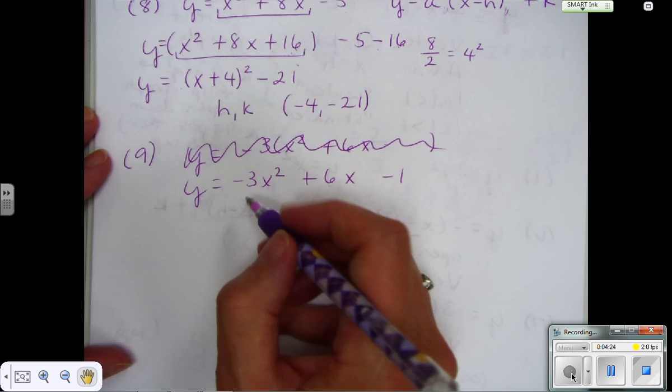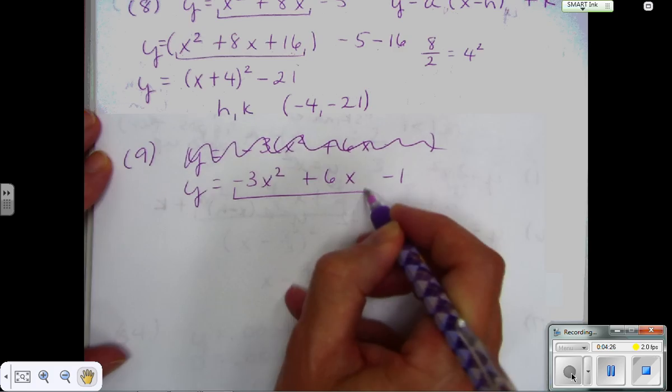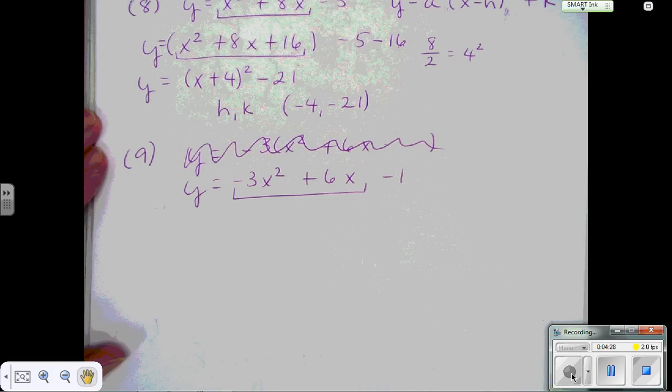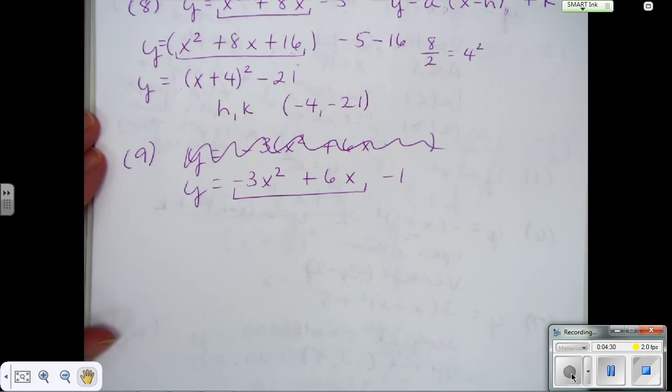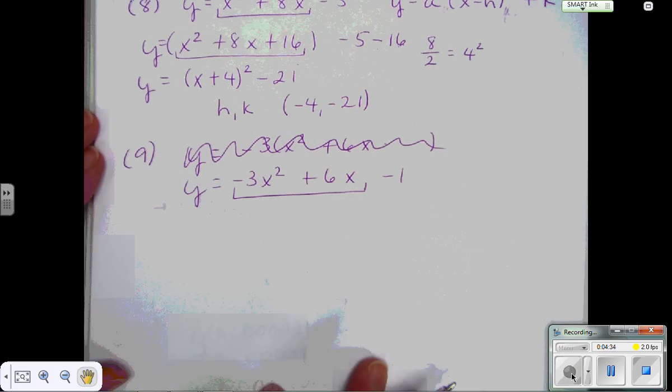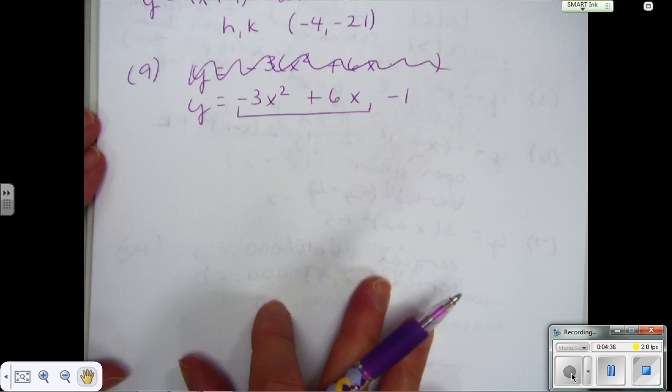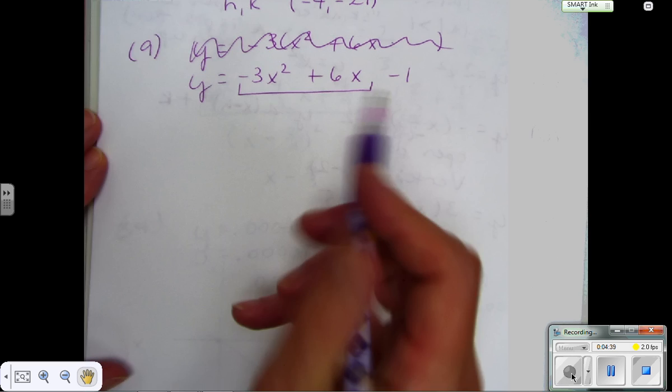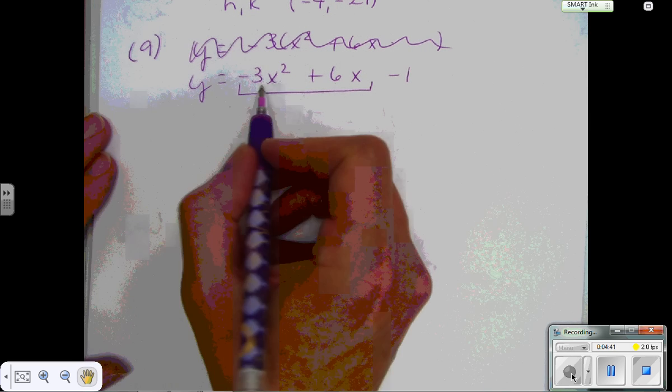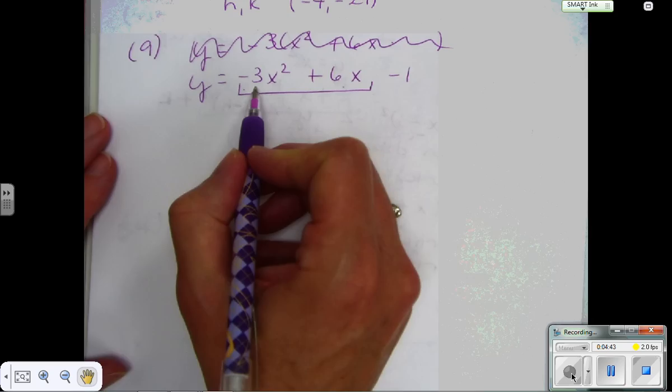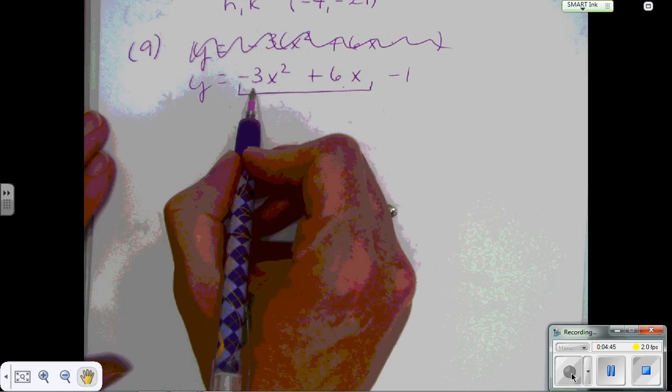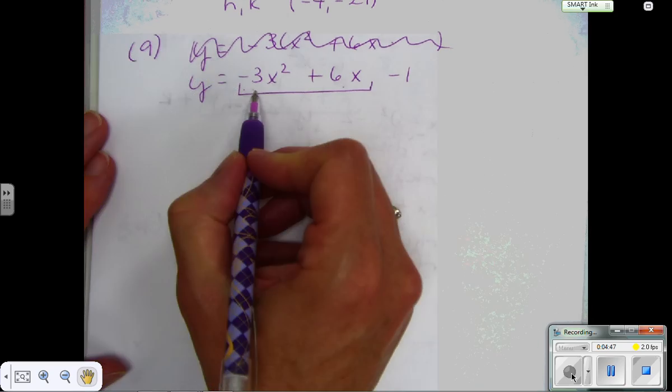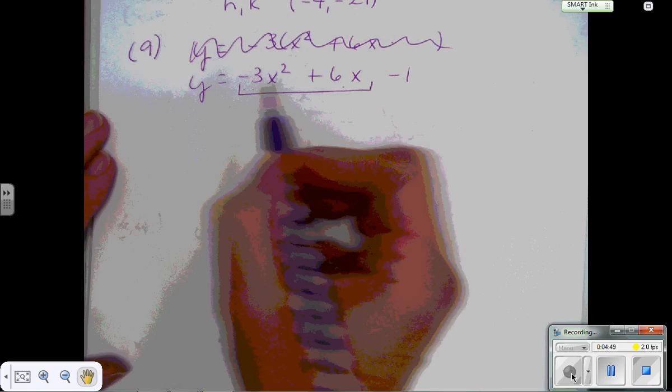Again, I'm going to group the squared term and the linear term. That constant value always gets left out in the cold. So what I want to do is I want to get that leading coefficient to be a 1. That's the way I need it to be to work the problem. So between these two terms, the quadratic and the linear term, I need to factor out that negative 3.